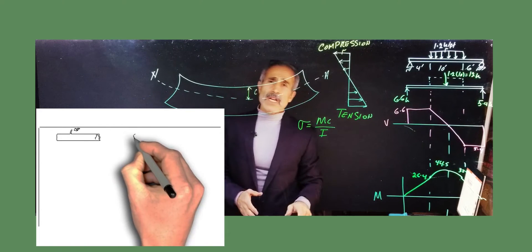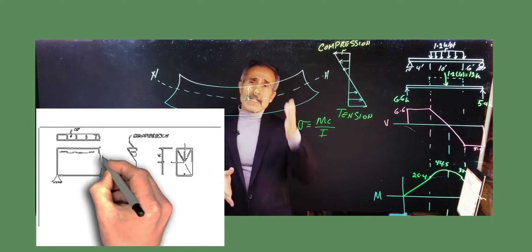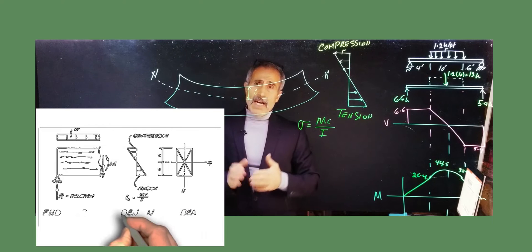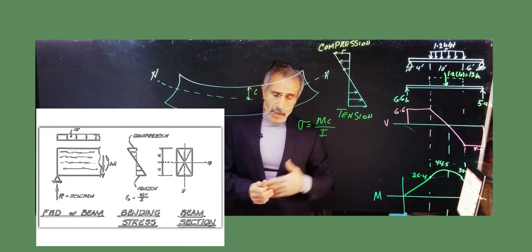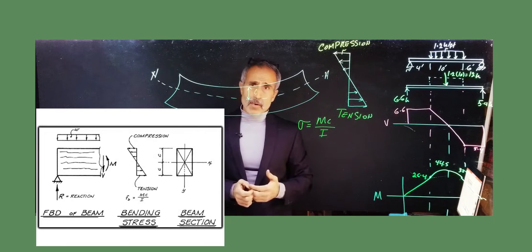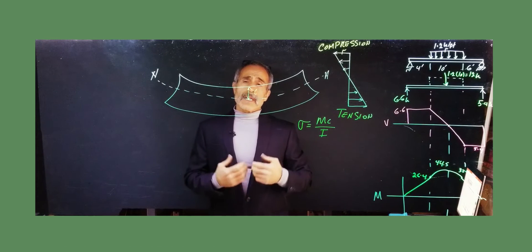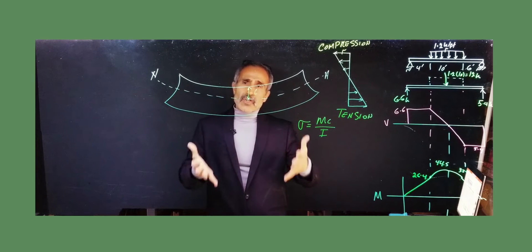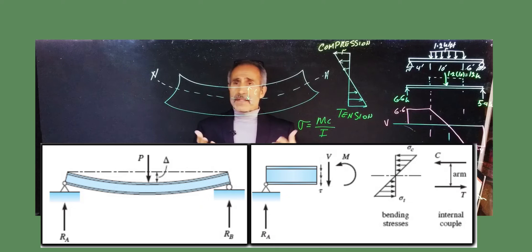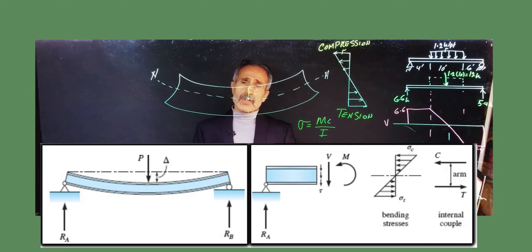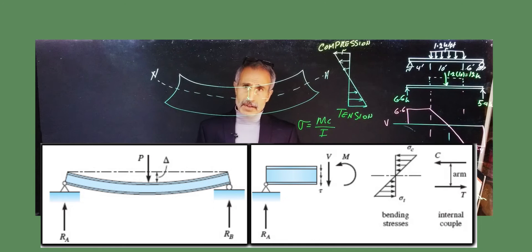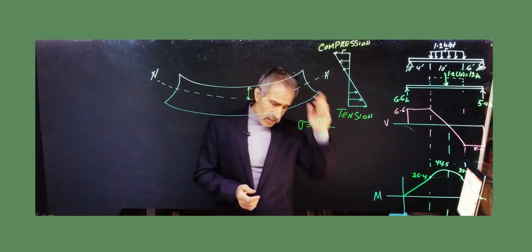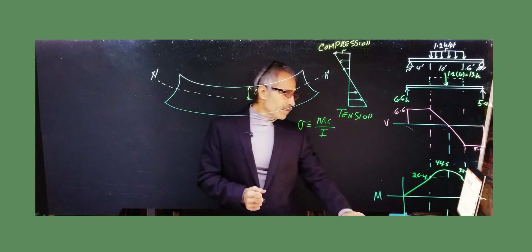If we take a long beam under load and cut a cross-section, as shown in previous videos, we see shear and bending moment. Those are the two things we're concerned about for design. If the beam fails, it will fail through shear or bending stress. Bending moment causes bending stress — the formula MC over I — and shear causes shear stress. We design a beam based on these two behaviors.